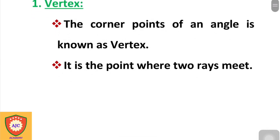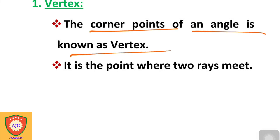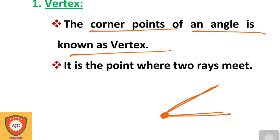The first part of an angle is the vertex. The corner point of an angle is known as the vertex. Two rays meet at this common point, which is the vertex.